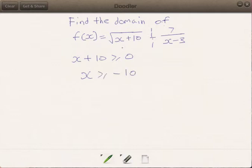This part is finished. We move on to the second part now. We know that when x is equal to 3, you will get 7 over 0. Therefore, our domain must exclude the value 3.